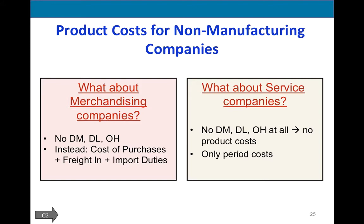Merchandising companies — retailers or wholesalers — did not have direct materials, direct labor, or overhead. Instead they used cost of purchases, freight-in, and import duties. For a service business such as a bank, consulting firm, or accounting firm, there are no product costs at all — all of their costs are operating expenses that go on the income statement. So accounting for a service company is much easier than accounting for a manufacturing company.